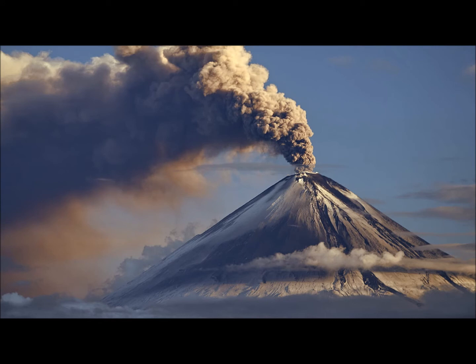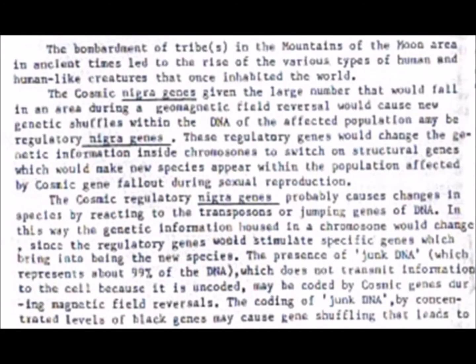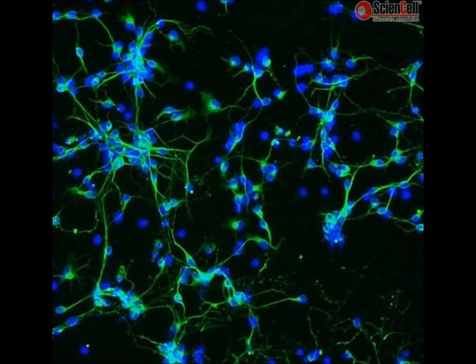This would account for the appearance of different hominids without the discovery of intermediate life forms showing the transition from one human species type to the next. The so-called undiscovered missing link, if my hypothesis is correct, is none other than the cosmic nigra gene. When tectonic changes take place in the earth as a result of magnetic field reversals, volcanic eruptions occur. During an eruption, carbon genes from the earth's interior and other minerals reach the surface through volcanic emissions. These interterrestrial black genes may bond with the cosmic nigra genes and affect plant and animal life.